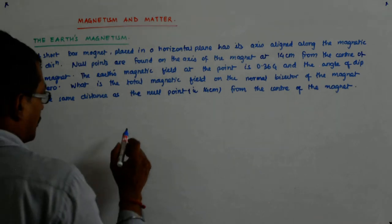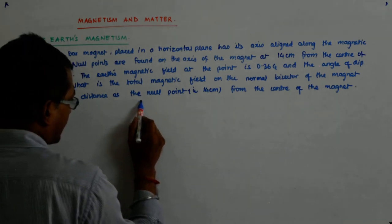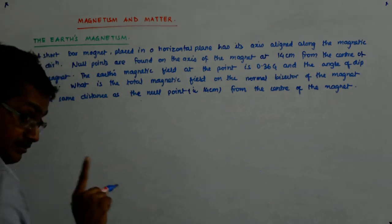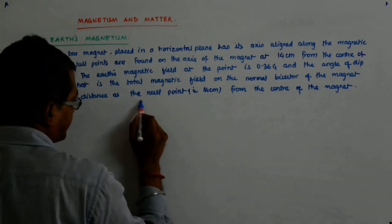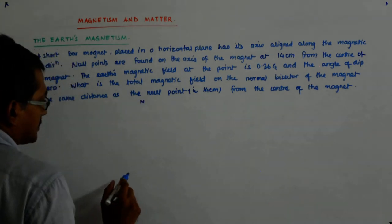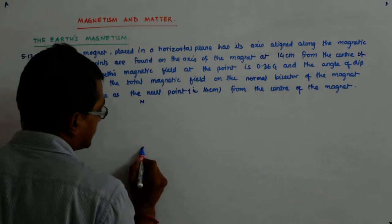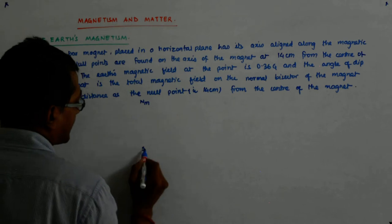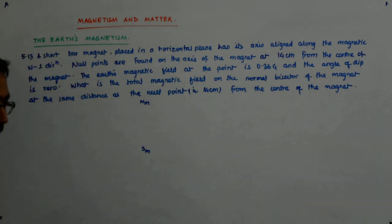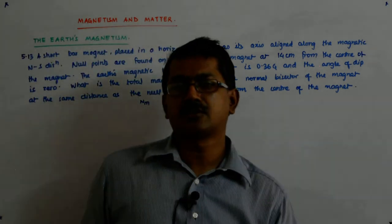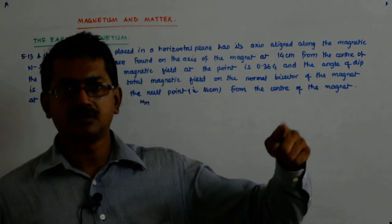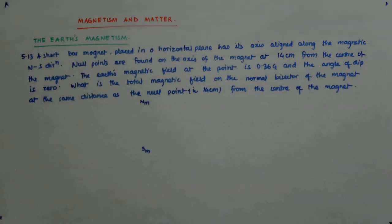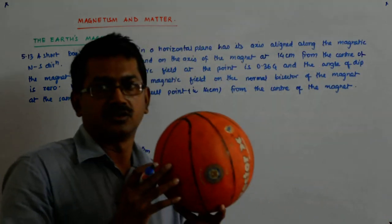Okay, so let us say this is my magnetic north-south direction. Magnetic north-south, fine. North-south. This is magnetic north, this is magnetic south, and I know that my fields they actually originate from the magnetic south. They originate from the magnetic south as happens in this ball. So this is the earth.